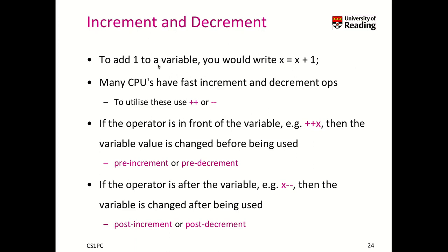Let's have a look into increment and decrement. To add 1 to a variable, you would write x equals x plus 1. Remember, the compiler first has to evaluate the expression on the right-hand side. So it takes whatever x was, adds 1, and this value is then assigned to x. So x becomes this result.